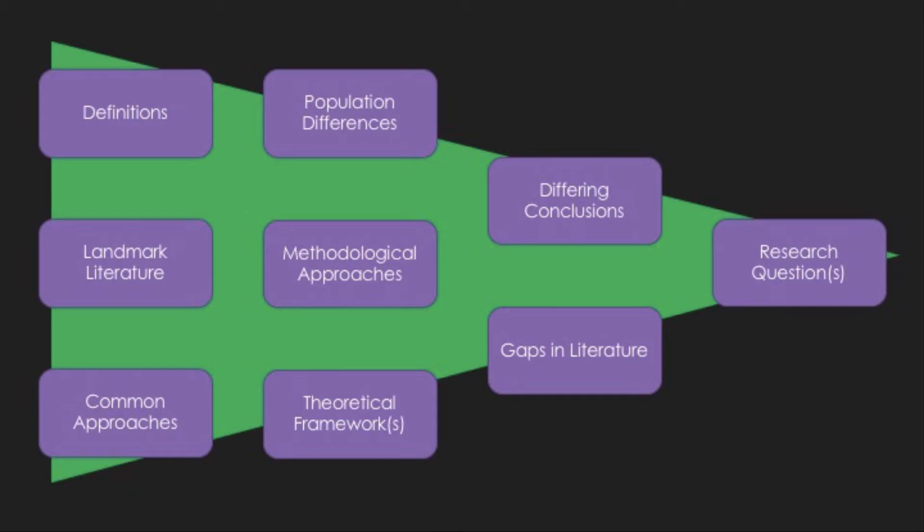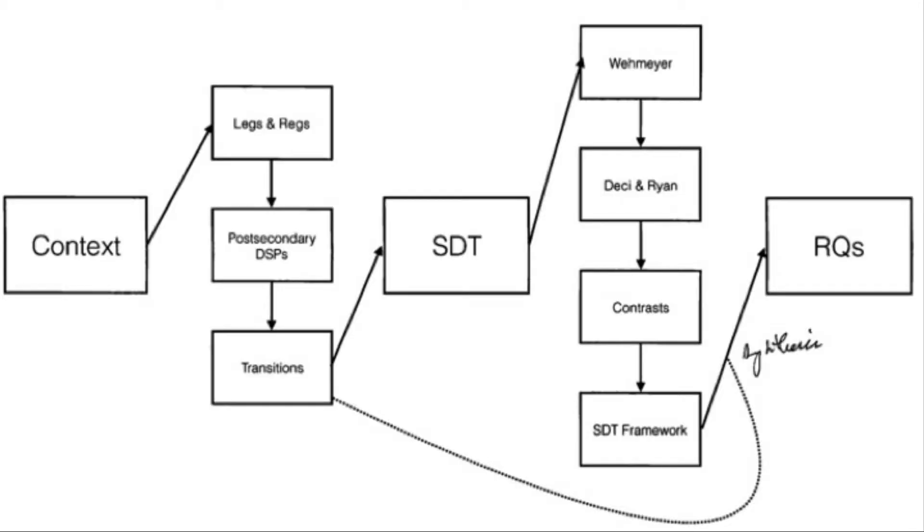Then I find the most meaningful path through these topics. My actual outline will be linear, so I find the line. Here's an example of a map I used for an actual research project. I wanted to organize the topics from issues of context to issues of theory, and then bring the context and theory together to the research question. The literature review is narrowing, topic by topic, to the research question.